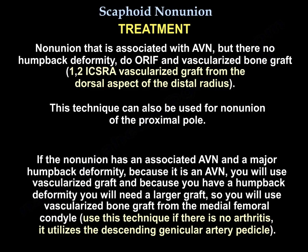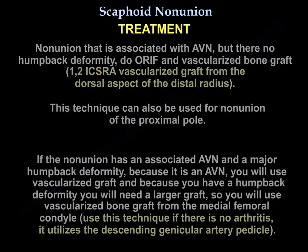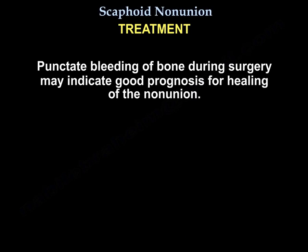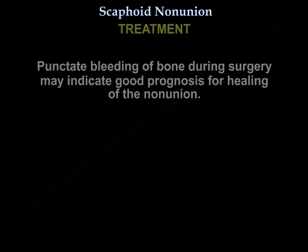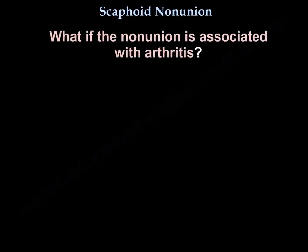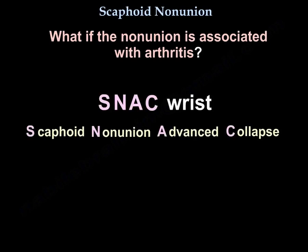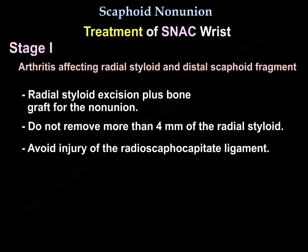Punctate bleeding of bone during surgery may indicate a good prognosis for healing of the non-union. What if the non-union is associated with arthritis? That is called SNAC wrist. For stage 1 arthritis affecting the radial styloid and the distal scaphoid fragment, you will do radial styloid excision and bone graft for the non-union. Do not excise more than 4 mm of the radial styloid, and avoid injury to the radioscaphocapitate ligament.